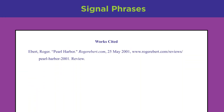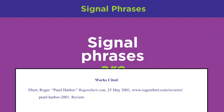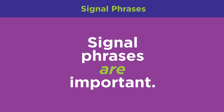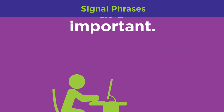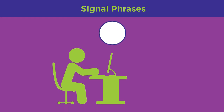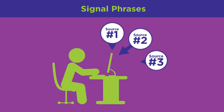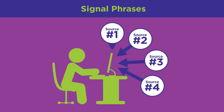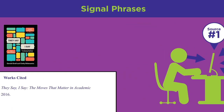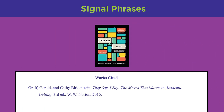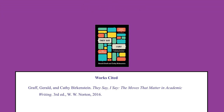By now you understand that signal phrases are important. Use them to tell the reader when you are paraphrasing or summarizing someone else's ideas, and to indicate when you are adding your own comments, interpretations, or clarifications. The ideas in this tutorial are inspired by and adapted from the text 'They Say / I Say' by Graff and Birkenstein.